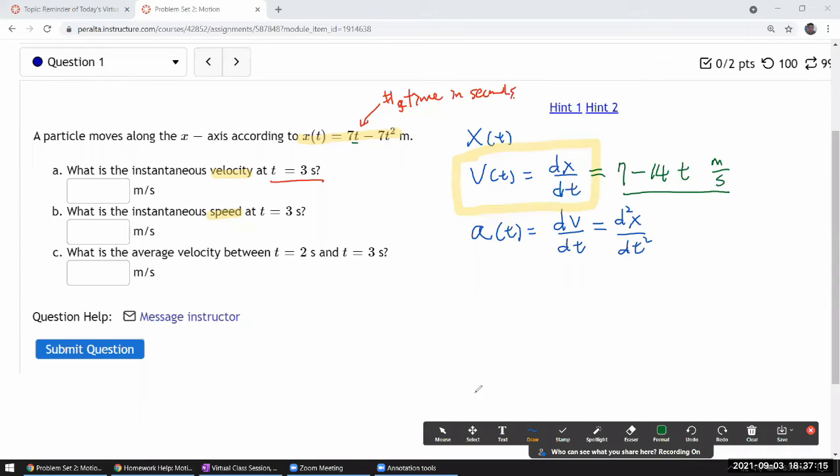So for the first question, really all we have to do is plug in 3 here. So let's see, 42, so it ought to be minus 35.